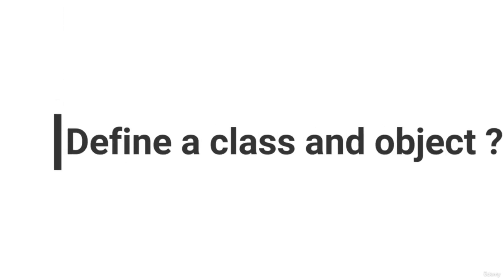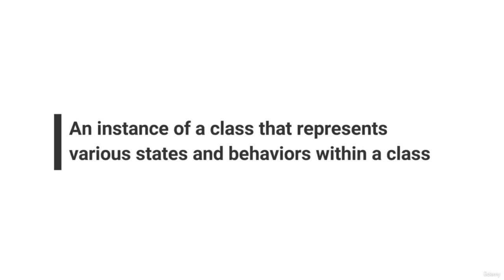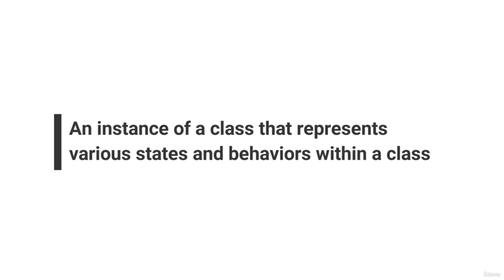Define a class and object. A class is a template that groups different methods and properties in a single unit. An object is an instance of a class that represents various states and behaviours within a class. A single class can have multiple objects.